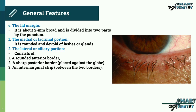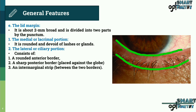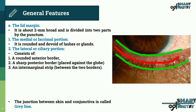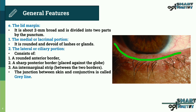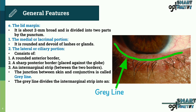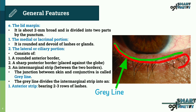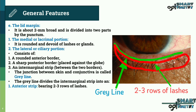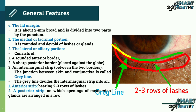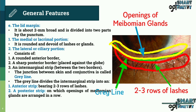In this figure you can see the anterior round border, the posterior sharp border, and the intermarginal strip. The junction between the skin and conjunctiva is called the gray line. The gray line divides the intermarginal strip into: one, an anterior strip bearing two to three rows of lashes; and two, a posterior strip on which openings of meibomian glands are arranged in a row.